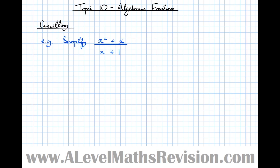Let's take this example: simplify x squared plus x over x plus 1. So many times I've seen students say the x's just cancel, and that tells me they've got the wrong idea of what cancellation actually means. To me, cancellation means that somewhere in that expression there's a hidden factor of 1, and we've got to try and unlock that factor of 1. Only if there's a hidden factor of 1 can we, in inverted commas, cancel.